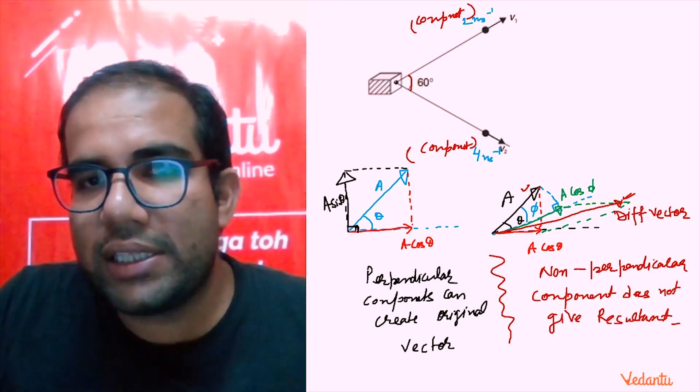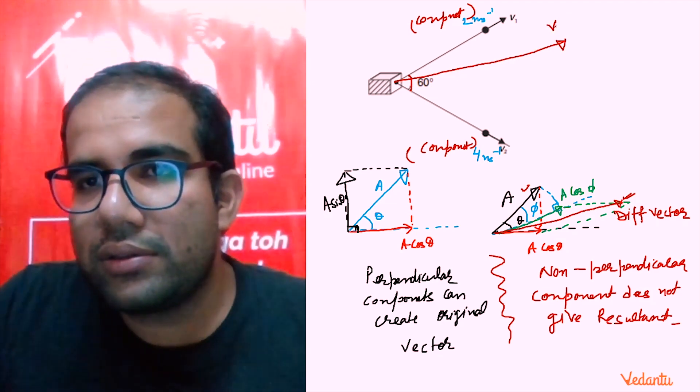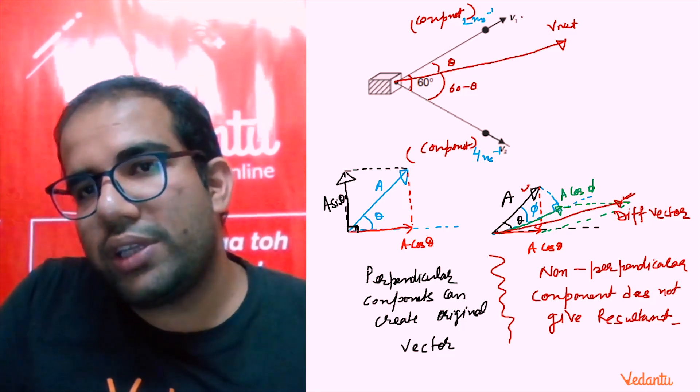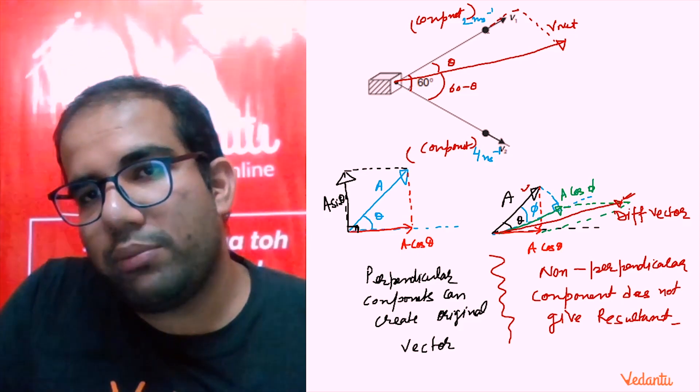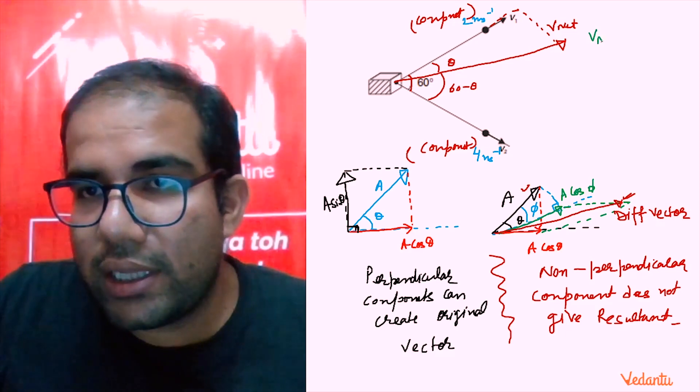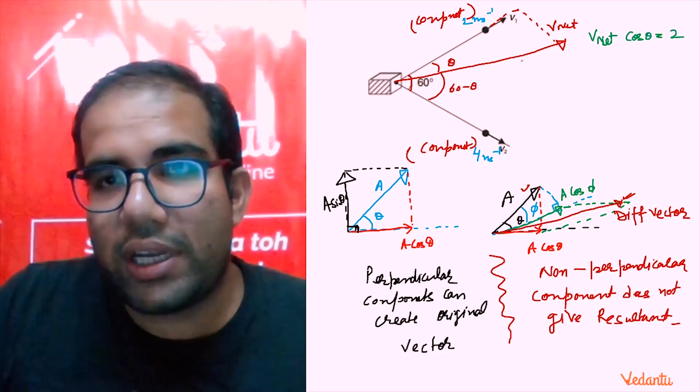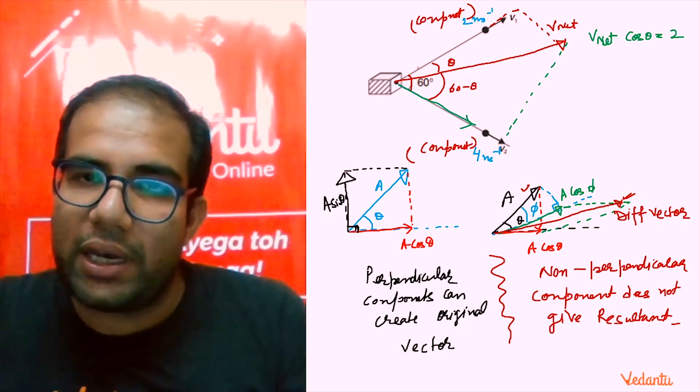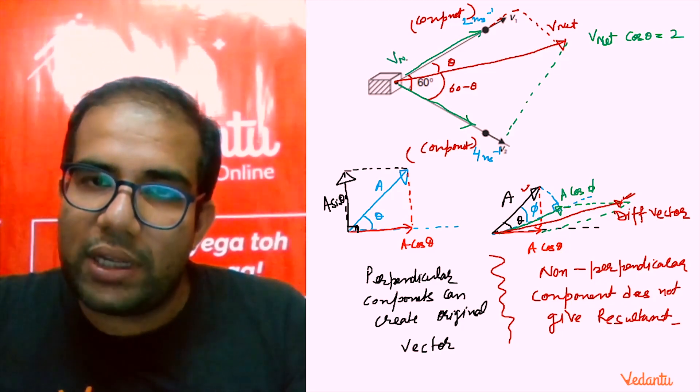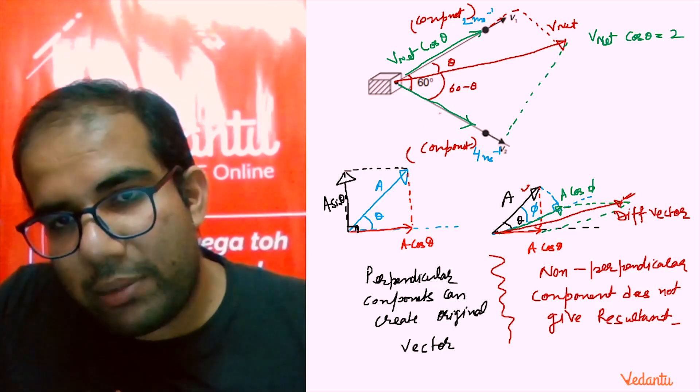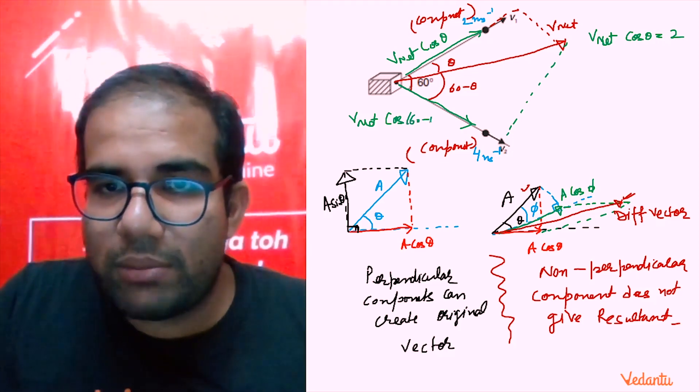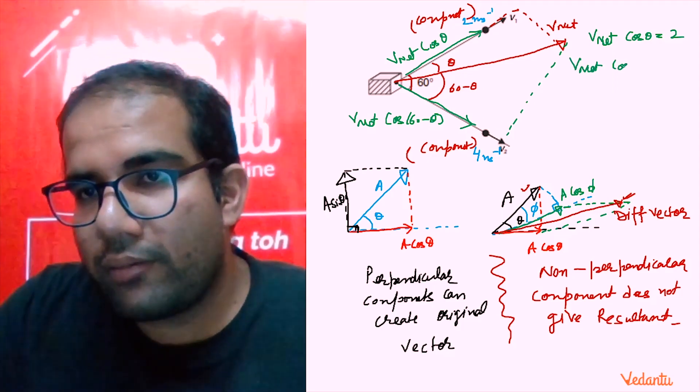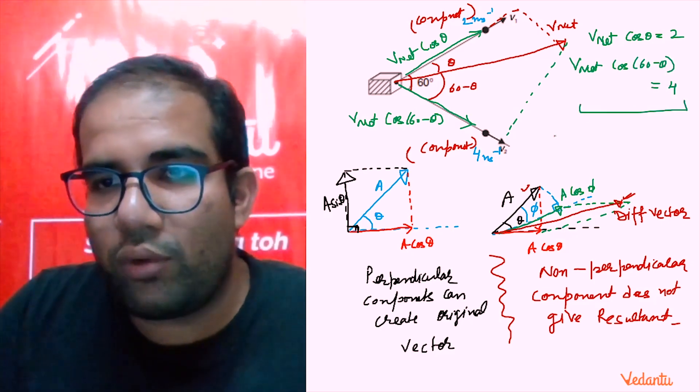So their resultant will not give the original vector; it will give a different vector. That's the beauty of this question. Now, what do we have to do in the question? That is very simple. Assume there is a net velocity making an angle theta with v1. Hence this angle will be 60 minus theta. So v1 is the component of v_net in that direction. The component of v_net is v_net times cos theta, which equals 2. And the component in the other direction is v_net times cos of 60 minus theta, which equals 4.